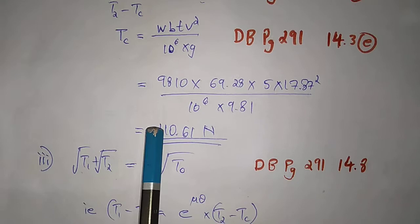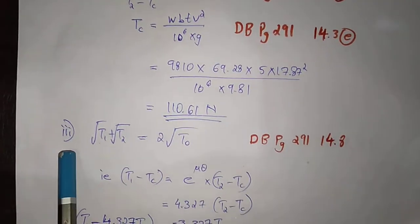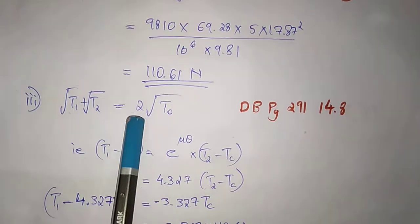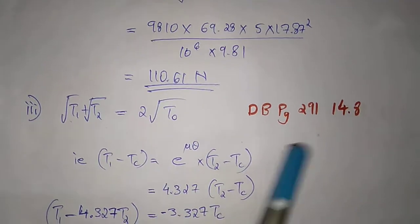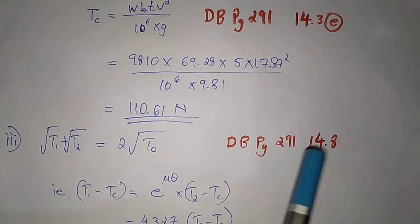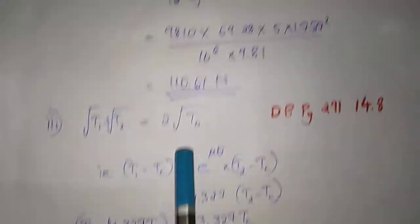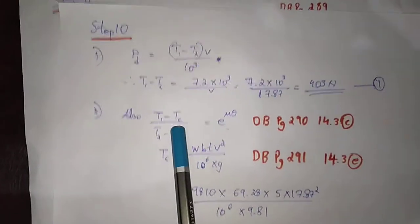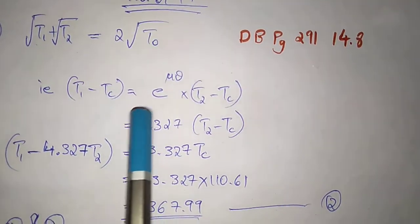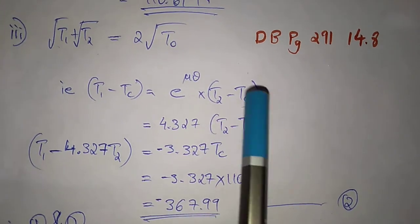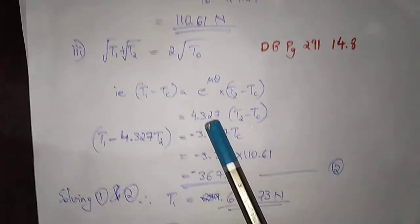We will now substitute into the third step. Root of T1 plus root T2 equals 2 into root T0, from data book page 203, equation 14.8. Rearranging: T1 minus Tc equals e raised to mu×theta into (T2 minus Tc). Substituting e raised to mu×theta = 4.327.